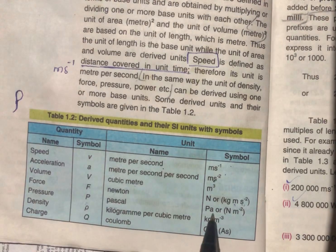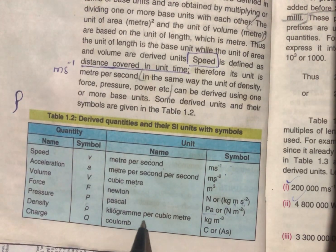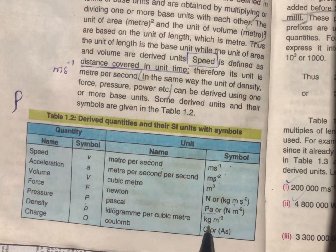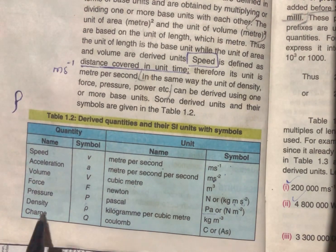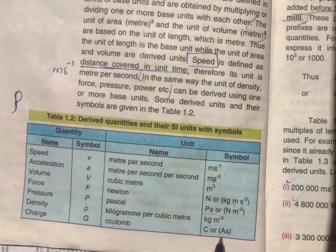Pressure is in pascal and density is kilogram per cubic meter.